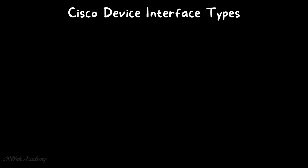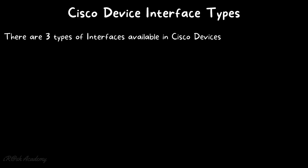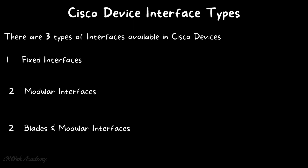There are three types of interfaces available in Cisco devices: number one, fixed interfaces; number two, modular interfaces; and number three, blade and modular interfaces. Let's discuss each in detail.